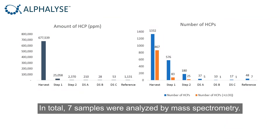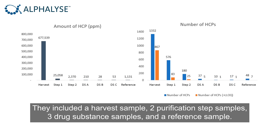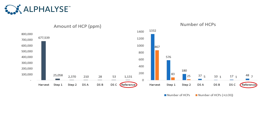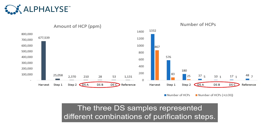In total, seven samples were analyzed by mass spectrometry. They included a harvest sample, two purification step samples, three drug substance samples, and a reference sample. The three drug substance samples represented different combinations of purification steps.